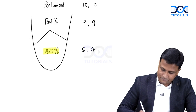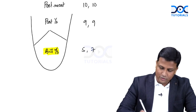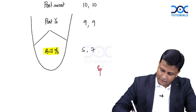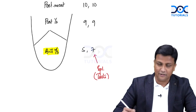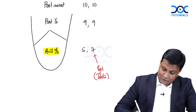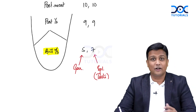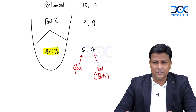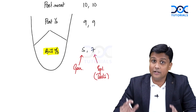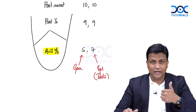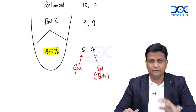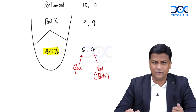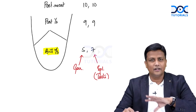From the anterior two-thirds of the tongue, the special sensation — taste — will be carried by the seventh cranial nerve, your facial nerve. And general sensation — pain, temperature, touch — will be carried by the fifth cranial nerve, that is the trigeminal nerve. Focus carefully on the anterior two-thirds because it uses different nerves for taste versus general sensation.